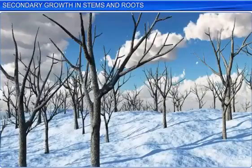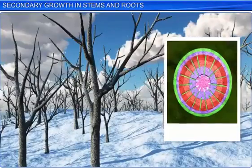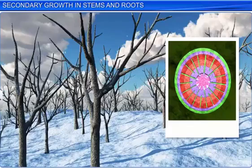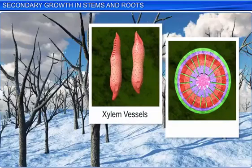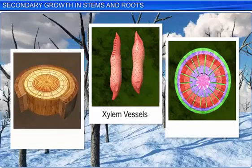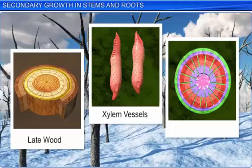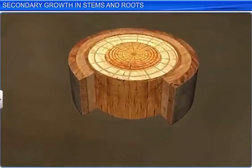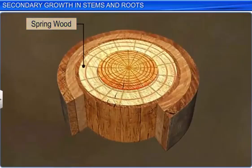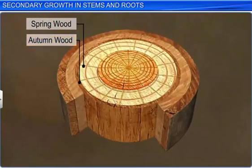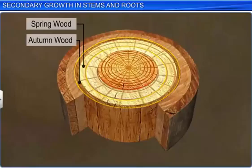On the other hand, during winter, the cambium is less active. Hence, it forms fewer xylem elements with narrow vessels. Wood formed during autumn is called autumn wood or late wood. Spring wood is lighter in color and has a lower density, whereas autumn wood is darker with a higher density. These two types of wood appear as two concentric circles on the trunk, and together represent the annual ring.